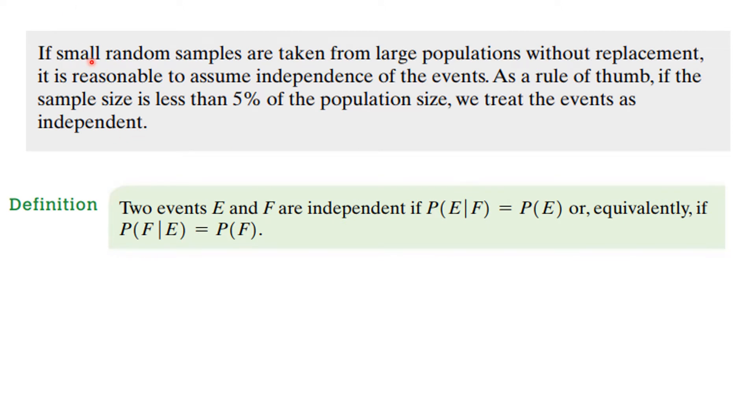If small random samples are taken from a large population without replacement, it is reasonable to assume the independence of the events. And the rule of thumb is if the sample size is less than 5% of the population, you should be good at making that assumption.